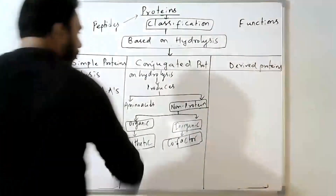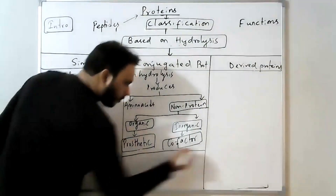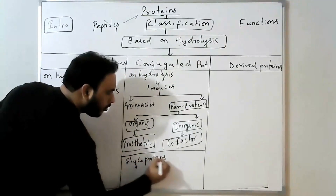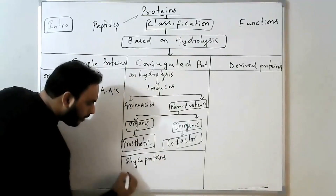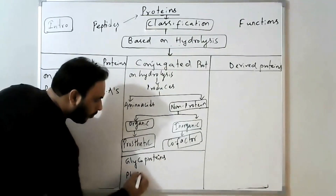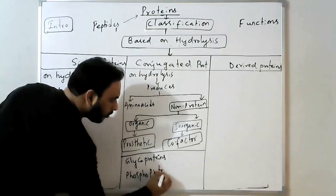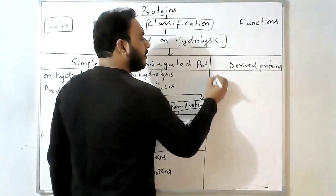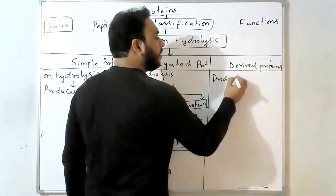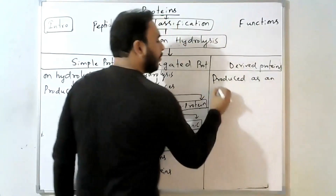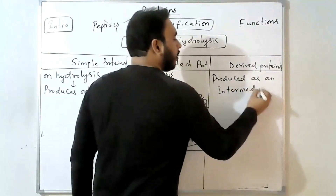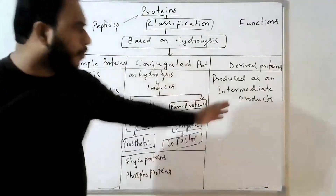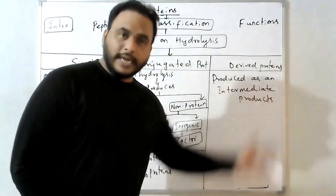Examples of conjugated proteins are glycoproteins, phosphoproteins. Derived proteins are produced as intermediate products, especially during the digestion of proteins — you get these intermediate products.